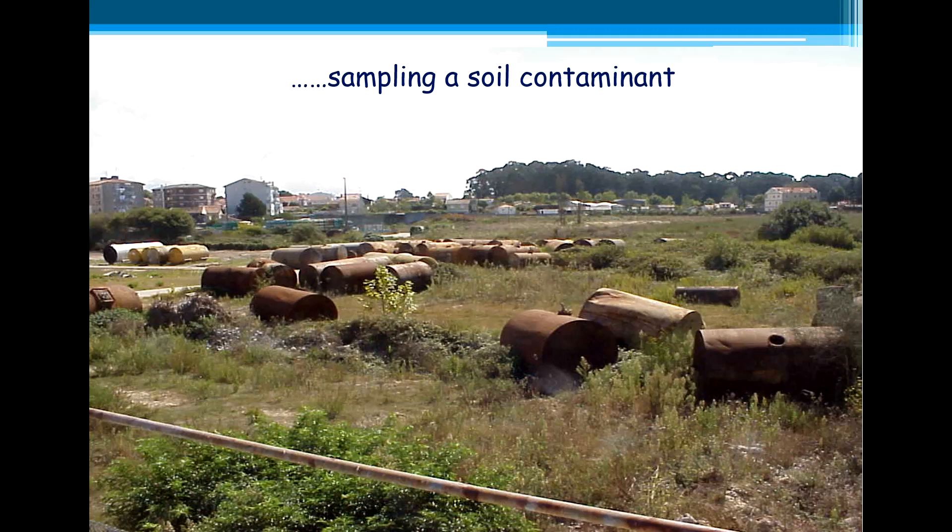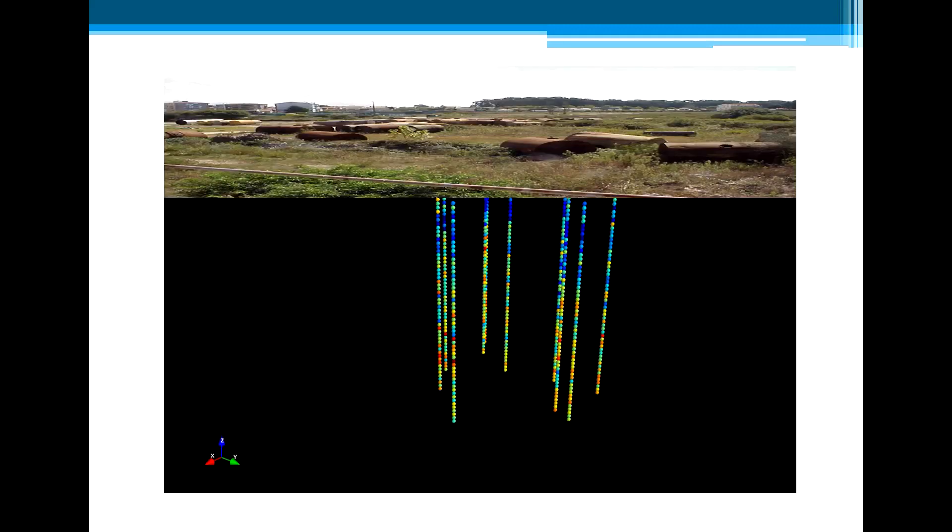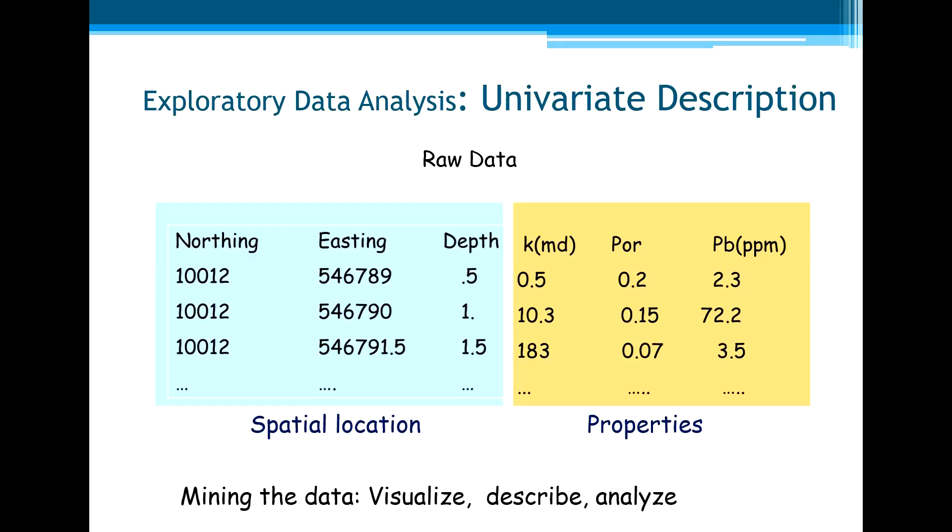Let us come back to the contaminated site of the previous model. From the wells, we took regular samples, analyzed the porosity, permeability, and also the contaminant concentration. This is the raw data coming from the sampling campaign: the coordinates and the properties.